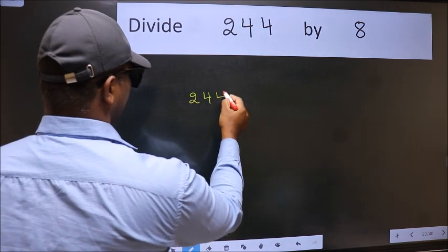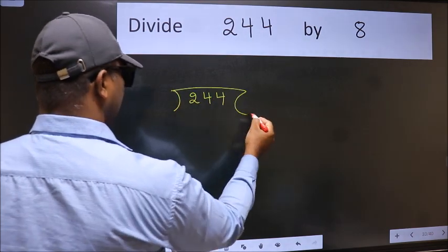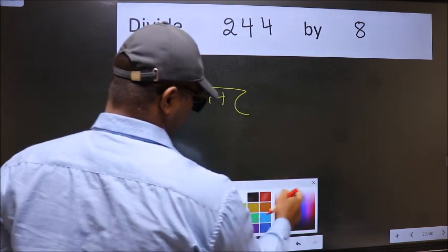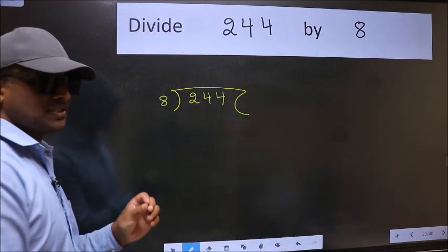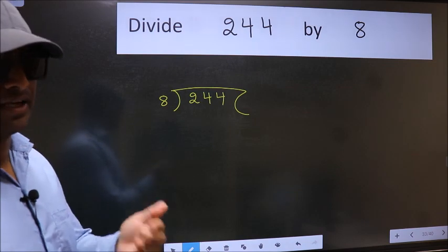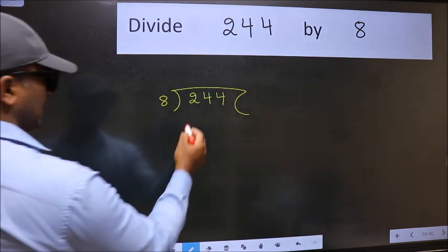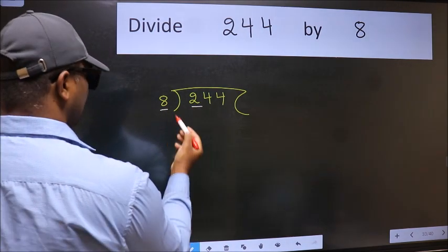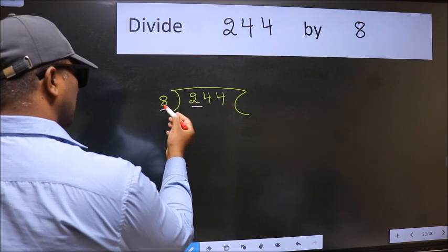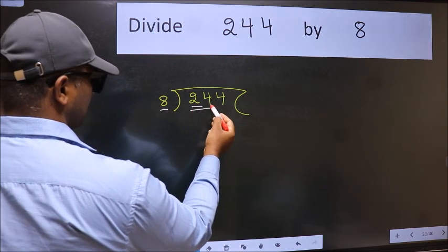244 here, 8 here. This is your step 1. Next, here we have 2 and here 8. 2 is smaller than 8, so take 2 numbers, 24.